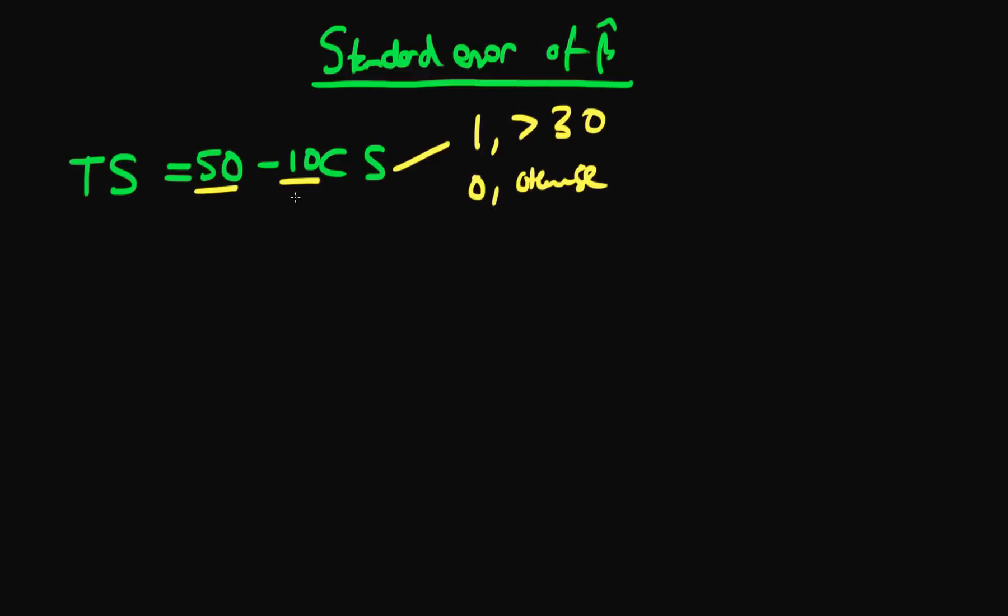But the trouble is because these are just point estimates, this 50 and this minus 10 here, we don't know whether these are the product of taking some particularly unusual sample, or sampling error, or whether they're due to there actually being some true relationship between classroom size and test score. So let's think about this.